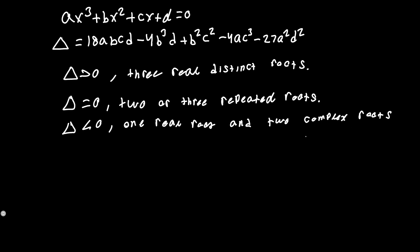The two complex roots are conjugates of each other. So the cases where the discriminant is greater than 0 and less than 0 are pretty straightforward. The case we mainly want to look at is when the discriminant is equal to 0.